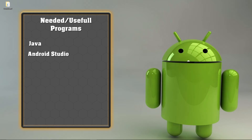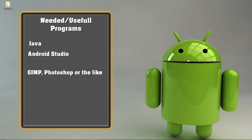Now to the more useful programs. If you want to create your own button design, you need a graphics program like GIMP or Photoshop. I did mine with Photoshop and you can design very nice buttons. When we want to add sounds to our soundboard we'll probably have to cut them, so we need an audio program. There's an open source program called Audacity that is really good for cutting and improving sounds — you should definitely take a look at that one.